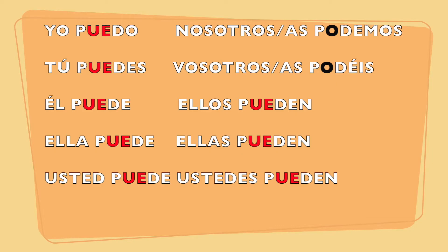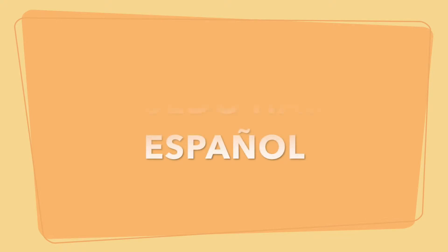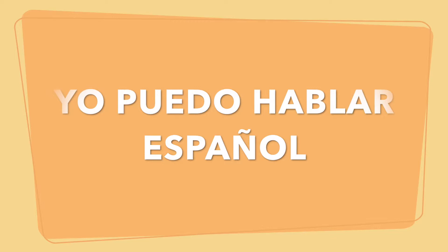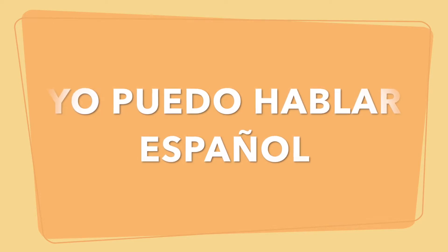Si yo quería decir — if I wanted to say 'I can speak Spanish' — let's check out the conjugation chart. How would I say 'I can' in Spanish? It would be yo puedo. Then I'm going to add the verb in its infinitive form: hablar — anything that I'm able to do. And then we add español. Yo puedo hablar español.